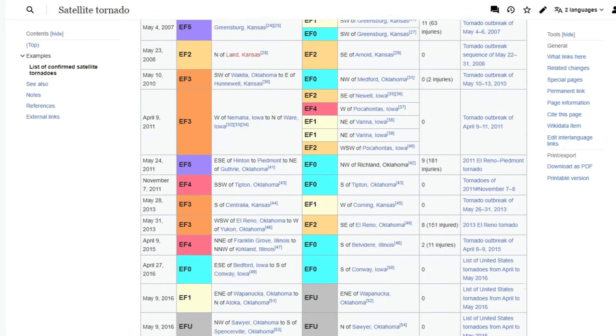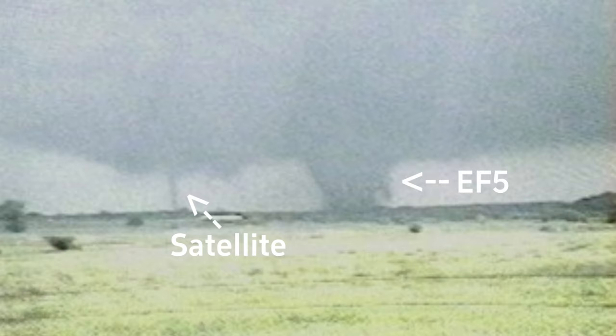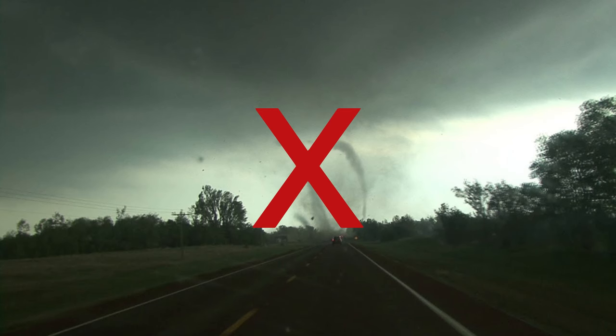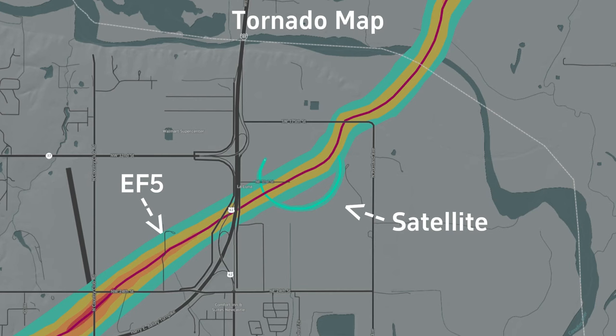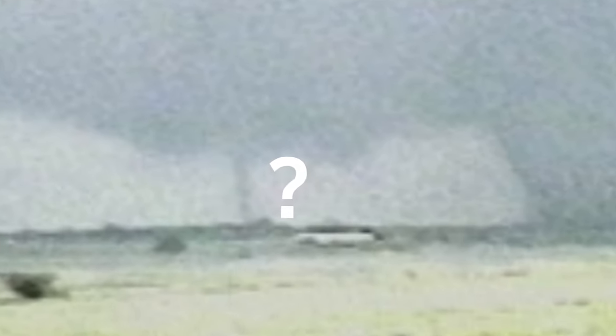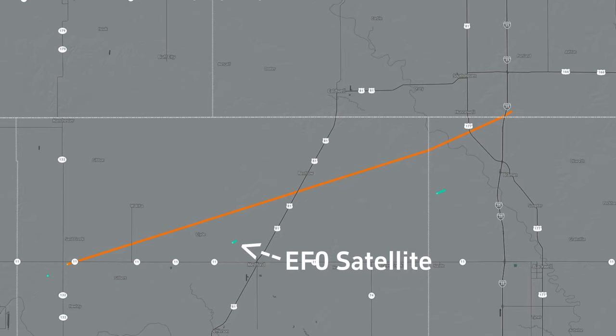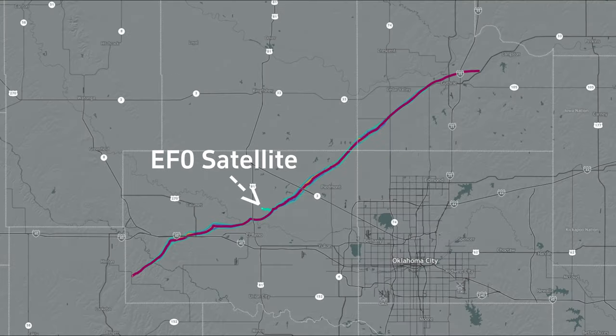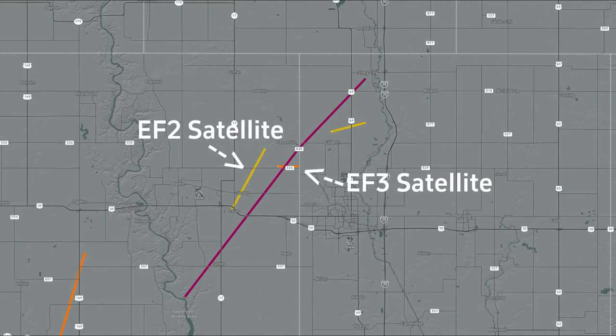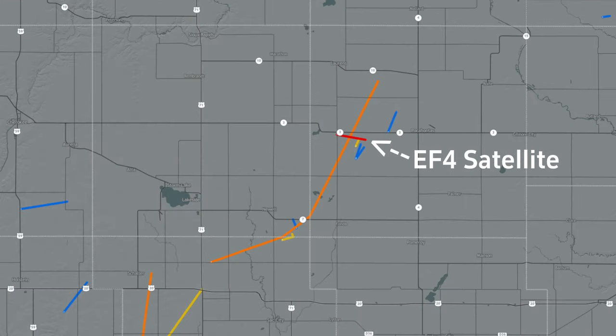Satellite tornadoes are somewhat rare and are usually associated with powerful and strong tornadoes. They are not considered subvortices, but rather as a separate tornado. The cause of satellite tornadoes is still unknown. These tornadoes are relatively weak most of the time, but can still sometimes be very strong, like on April 9, 2011, when an EF-3 in Iowa spawned a satellite tornado that was rated an EF-4.